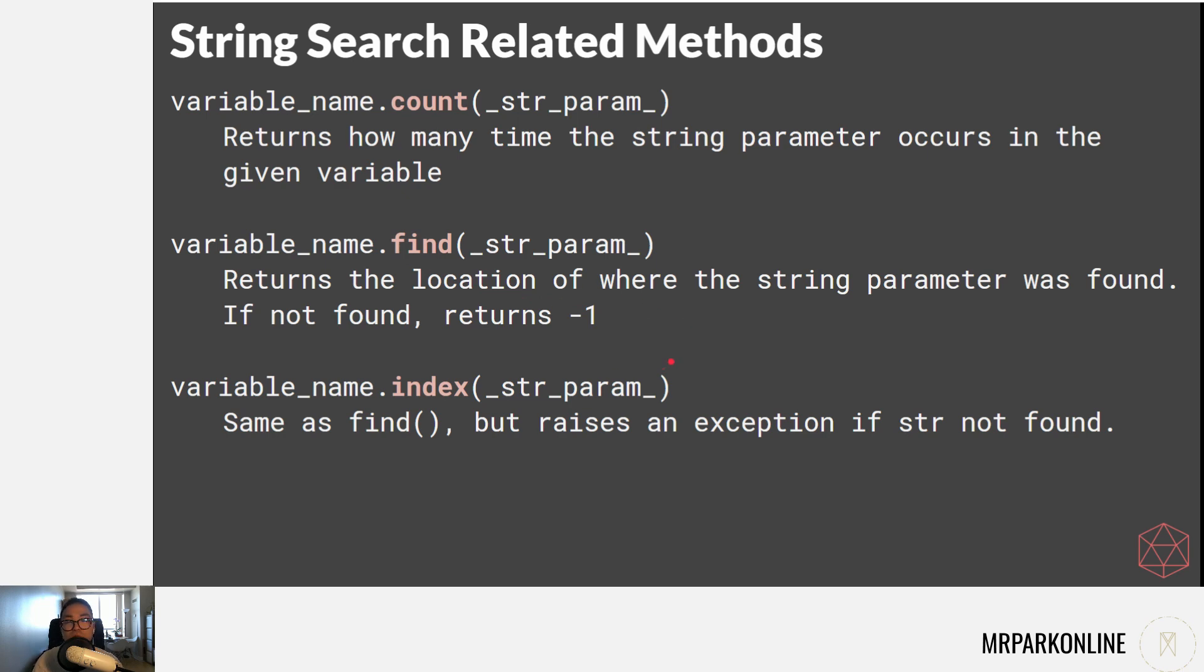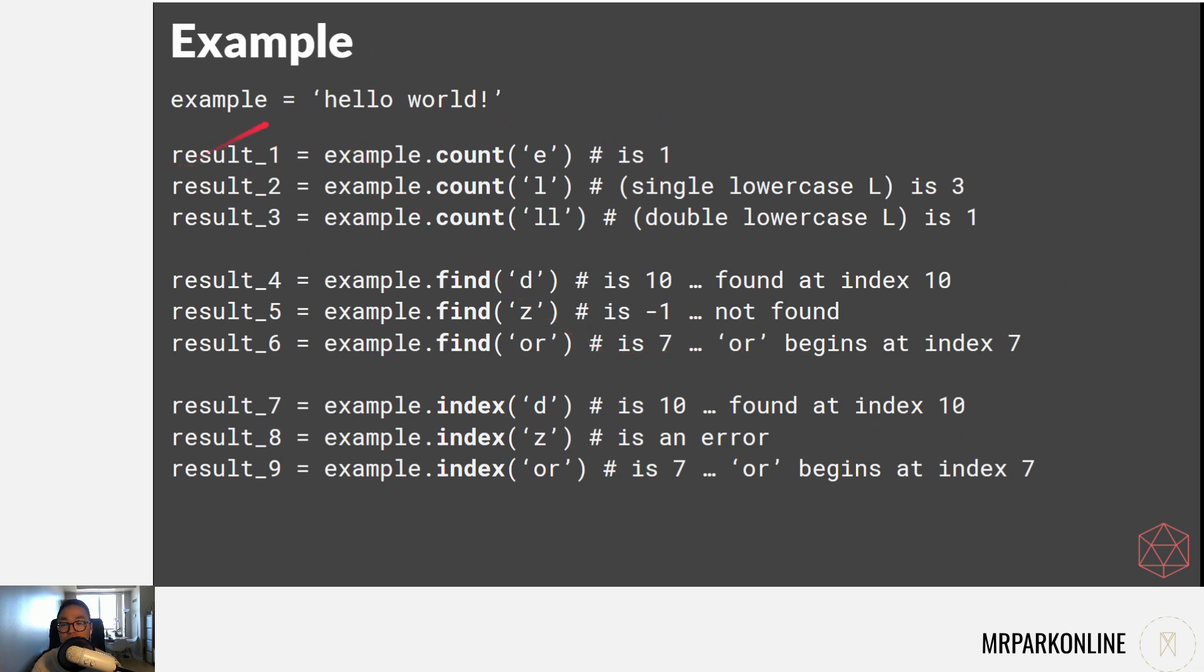Let's run an example. I have a variable called 'hello world'. For this string, I'm accessing a method called count. It counts how many 'e's I have - one. How many lowercase 'l's - three. If I'm looking for double 'l', it only exists once, so it gives us one. Finding 'd' gives us index 10. Finding 'z' gives us negative one because it's not found. Finding 'or' gives us seven because that's where the pattern starts. When you give a string that's longer than one character, it gives you the index where it starts, not where it ends.